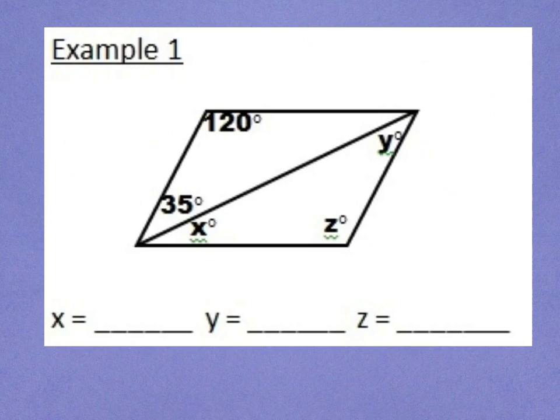We're looking at angles in this problem, so we'll probably use some of our properties about angles. If opposite angles of a parallelogram are congruent, I know that angle z must be congruent to 120 degrees. That was easy.